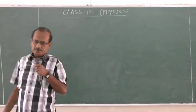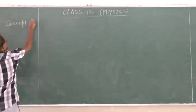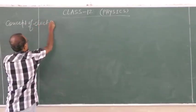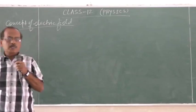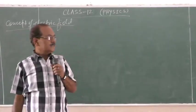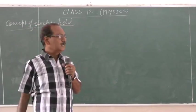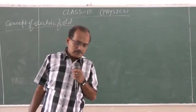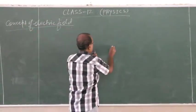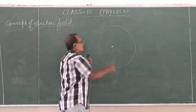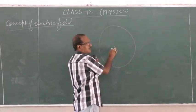The next topic is the concept of electric field. An electric field is a region or space around a stationary charge where another electric charge will experience a force. A point charge creates an electric field around it, and beyond this space there is no effect of that charge.